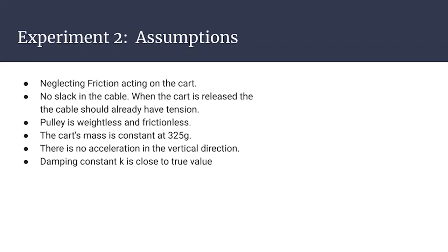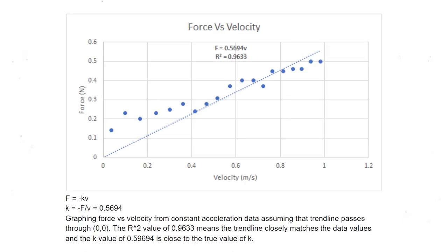For experiment 2, the same assumptions and free body diagrams are used from experiment 1. However, the damping constant k is close to the true value. Damping force is given by the damping coefficient times by the velocity. The equation is rearranged to show that the damping coefficient is proportional to the force divided by the velocity. This relationship is then graphed with the damping coefficient as the gradient. A trendline is fitted to the graph and is forced to the origin as there should be no force when the car is stationary. The equation of the trendline shows that the damping coefficient is 0.5694.